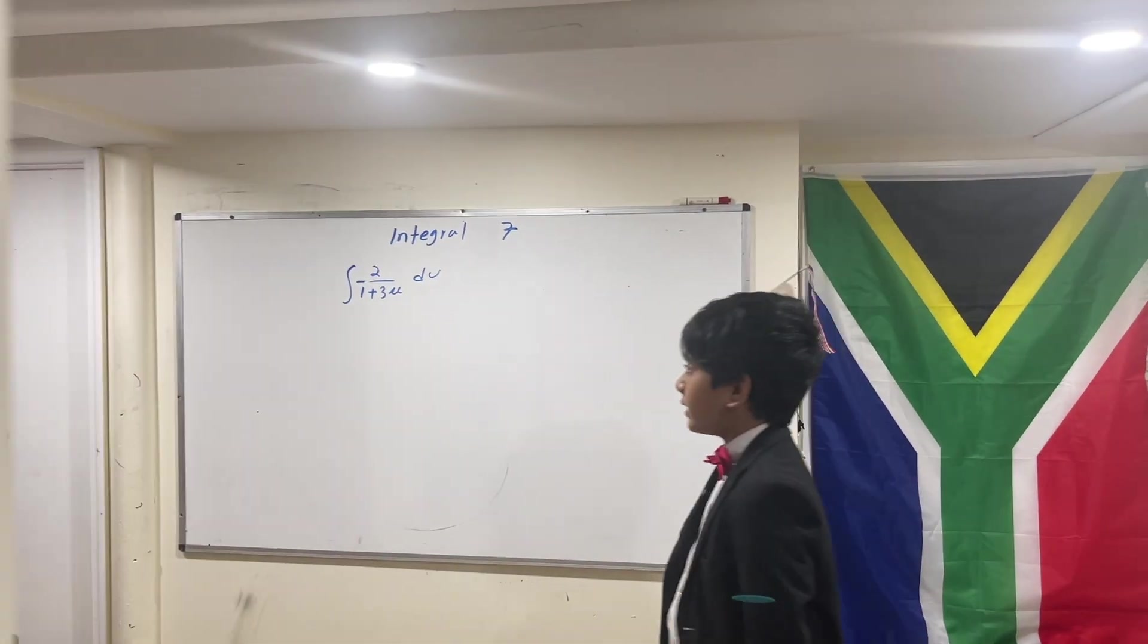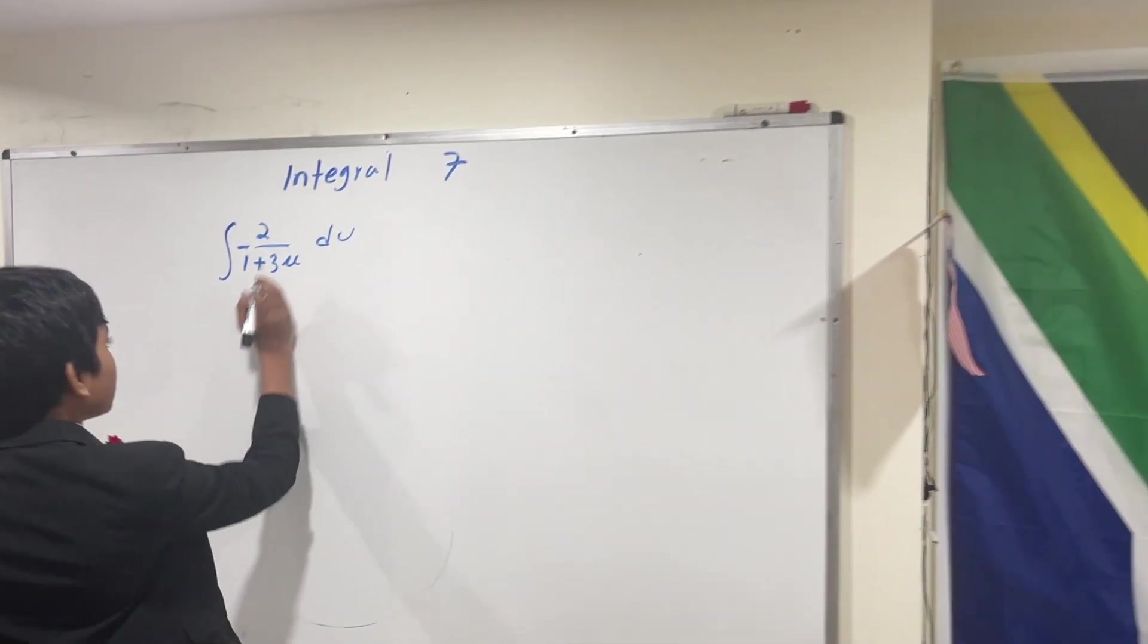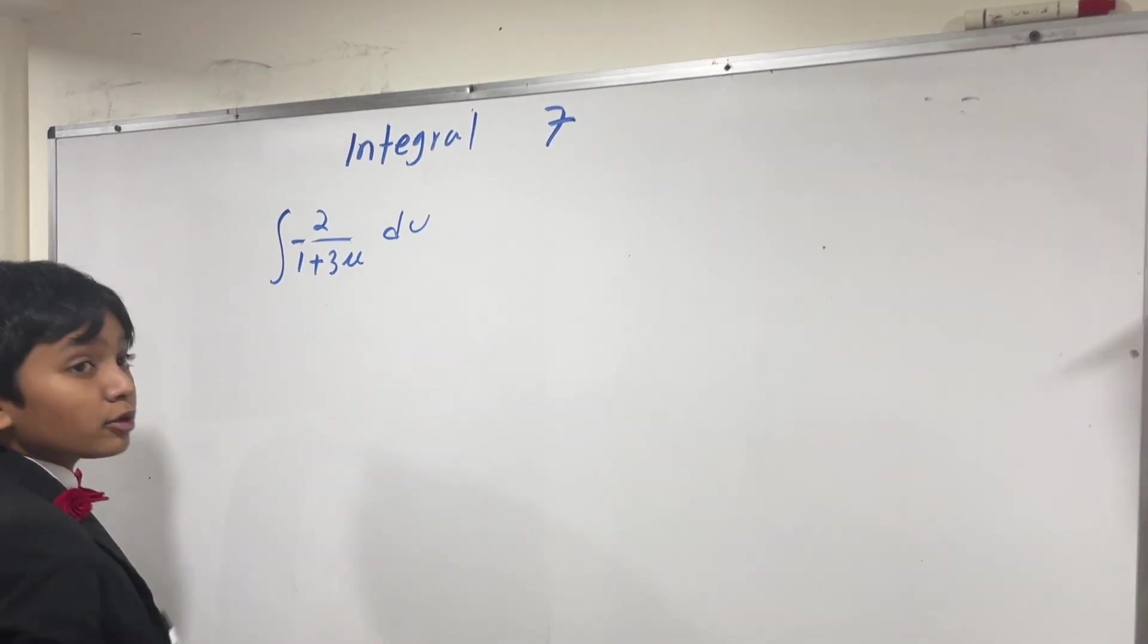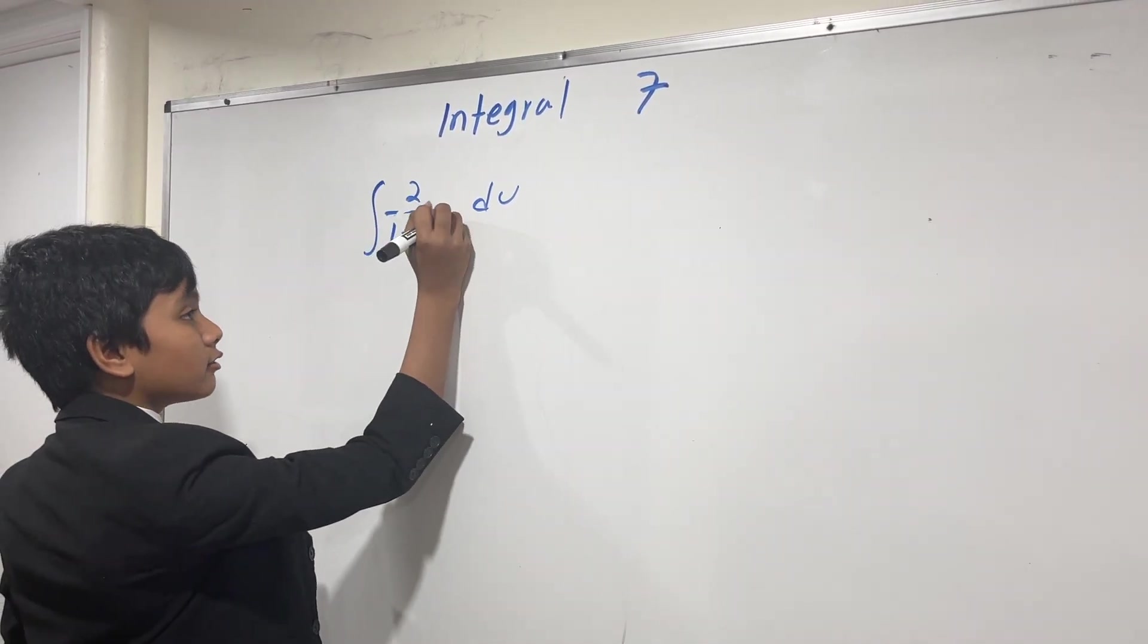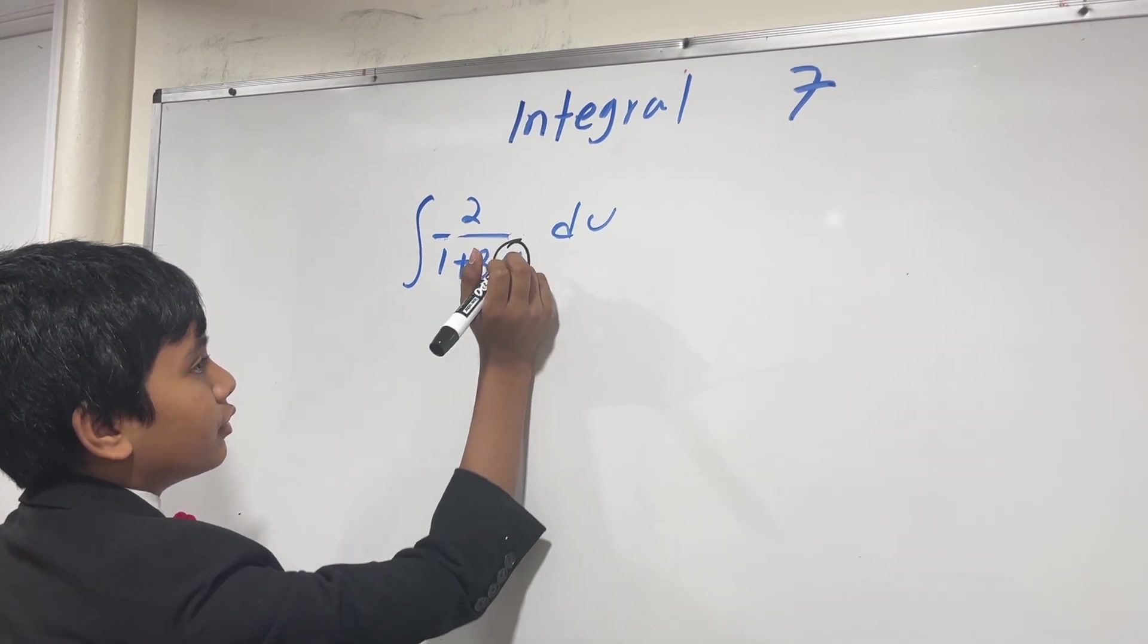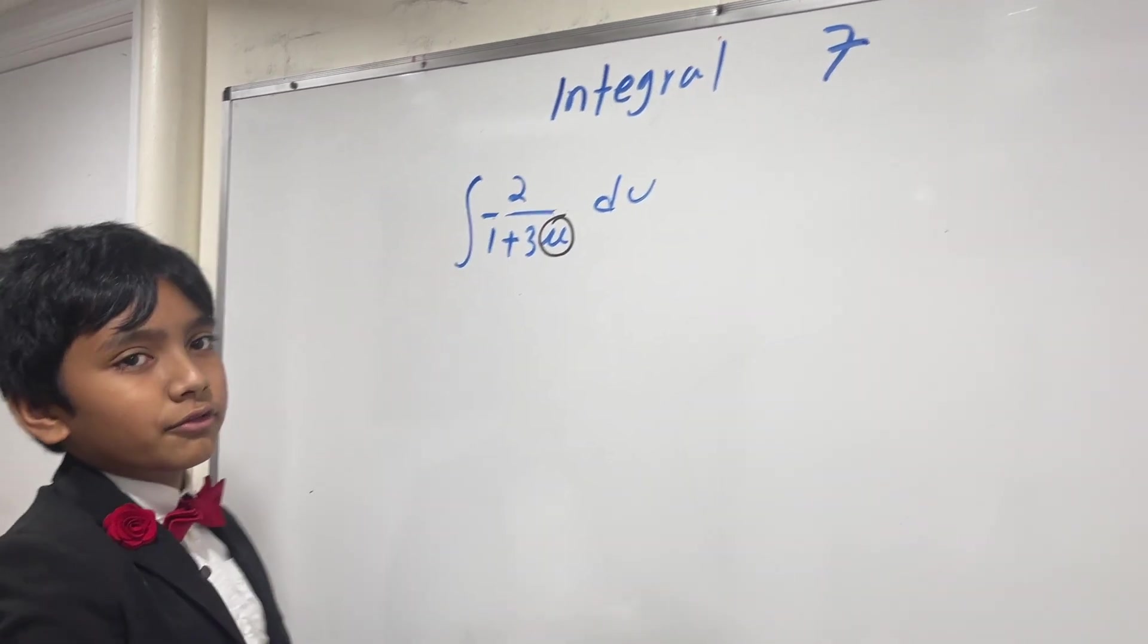Alright, so let's do integral number 7. Here we would normally u-sub, but the variable is du, so instead we'll v-sub.